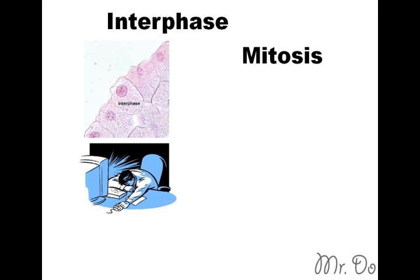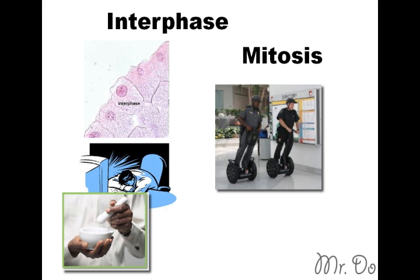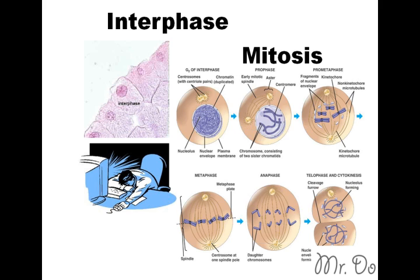Think of it like pharmacists versus policemen. Even though pharmacists make a lot of money, the job's kind of boring — how many movies do you know that are made about pharmacists? Not that many. Compared to policemen, there's a lot of action going on, that's why there are a lot of movies made about policemen. So think of the mitotic phase as where all the action takes place — that's where we're going to focus most of our learning. Whereas the interphase is just a very simple, slow phase, but it's one of the longest phases in the cell cycle.